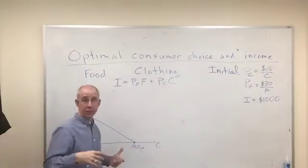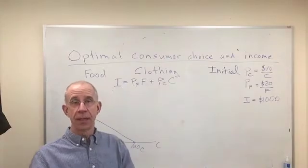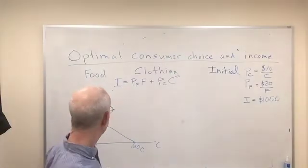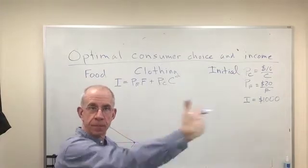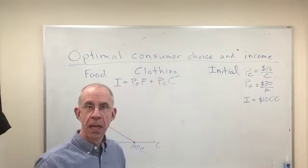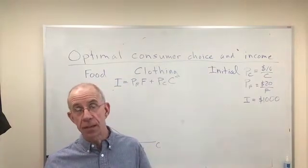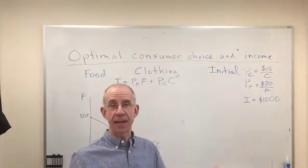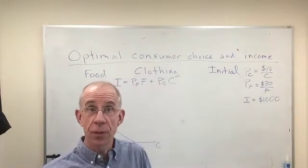In another video we talked about how a budget constraint will change if there is a change in income. It shifted out. I want to now talk about how that change in income may affect the decision of consumers to buy different combinations of the goods.